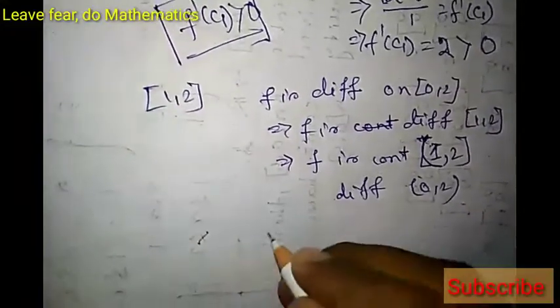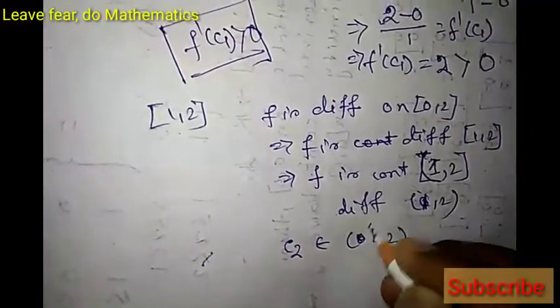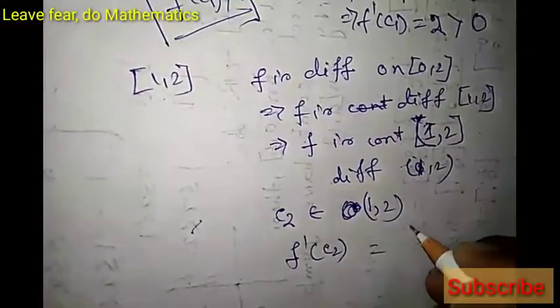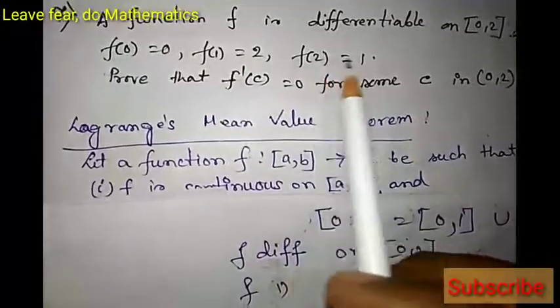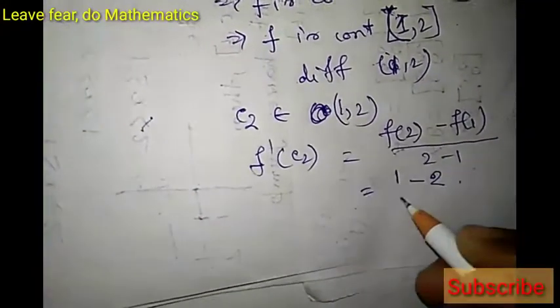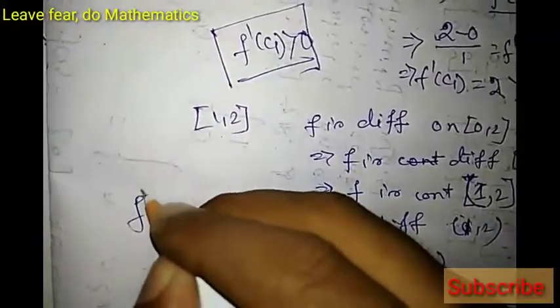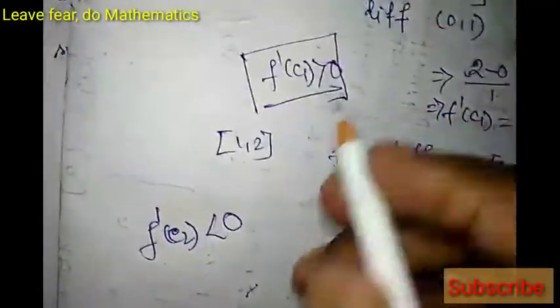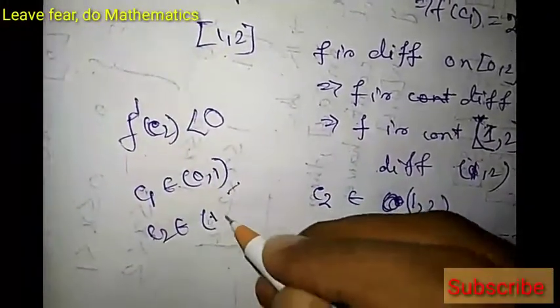Again applying Lagrange's MVT, there exists c2 in open interval (1,2) such that f'(c2) = [f(2)-f(1)]/(2-1). Now f(2)=1 and f(1)=2, so f'(c2) = (1-2)/1 = -1, which is strictly less than 0. So we now have f'(c1) > 0 with c1 in (0,1) and f'(c2) < 0 with c2 in (1,2).